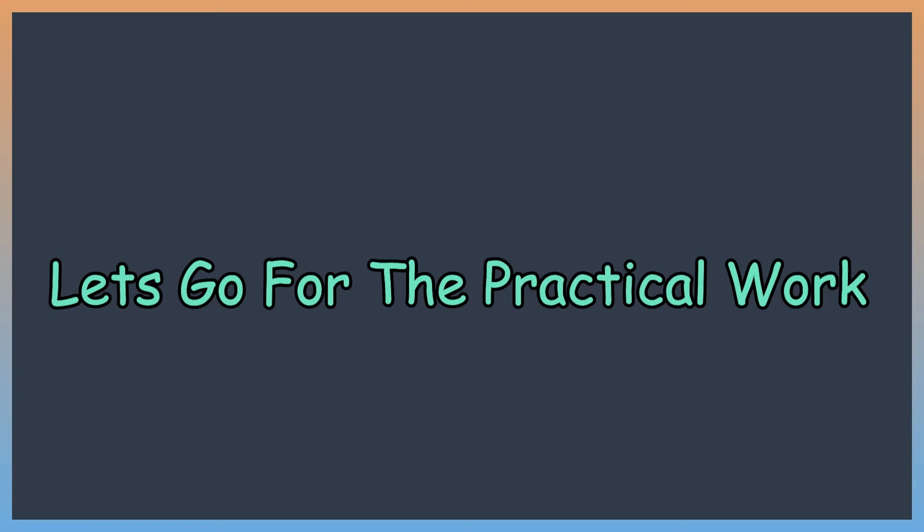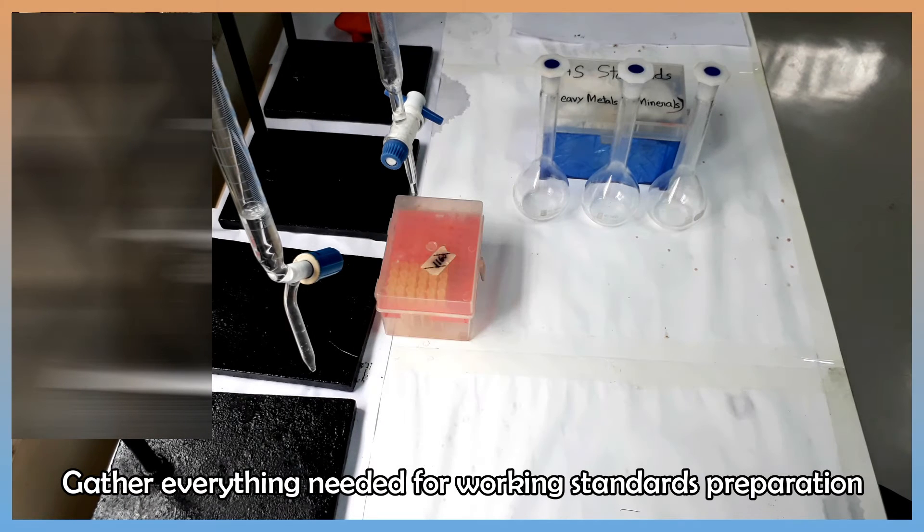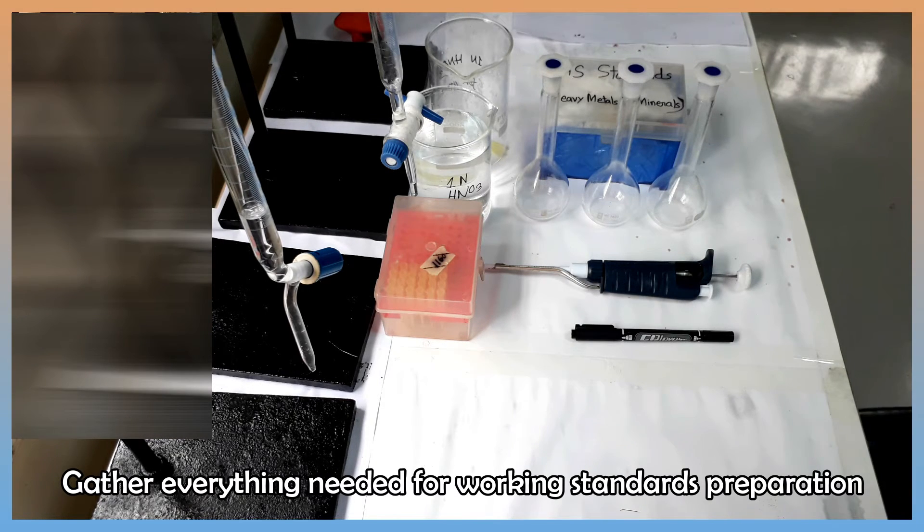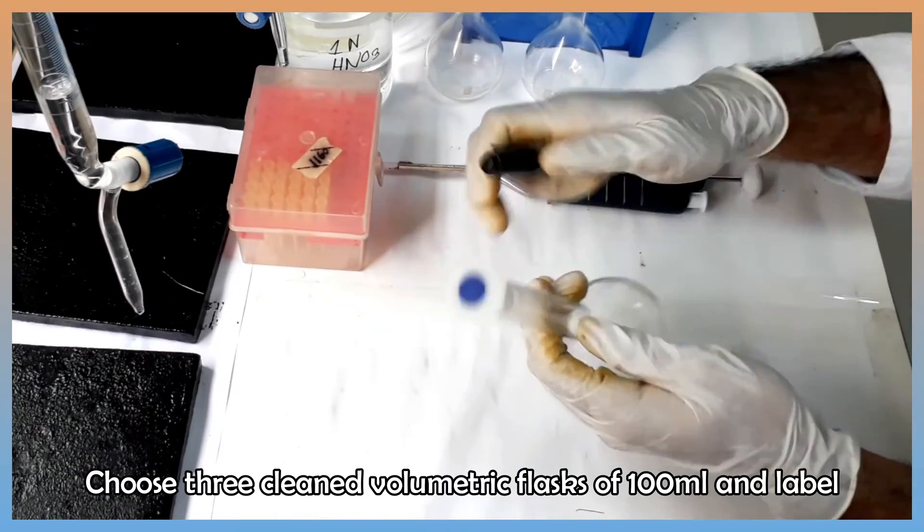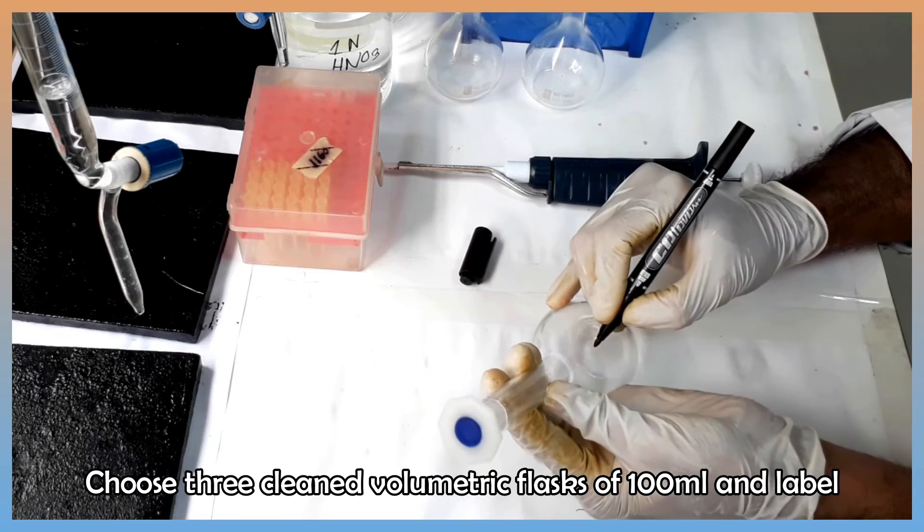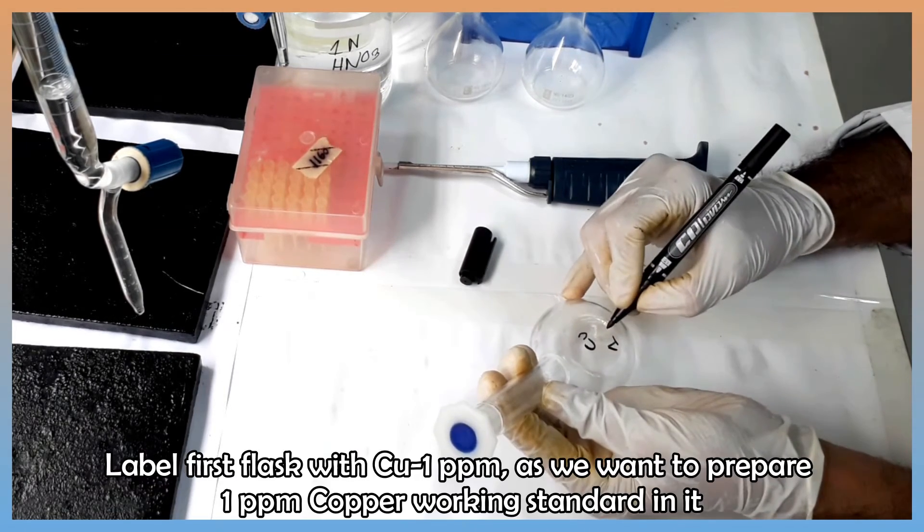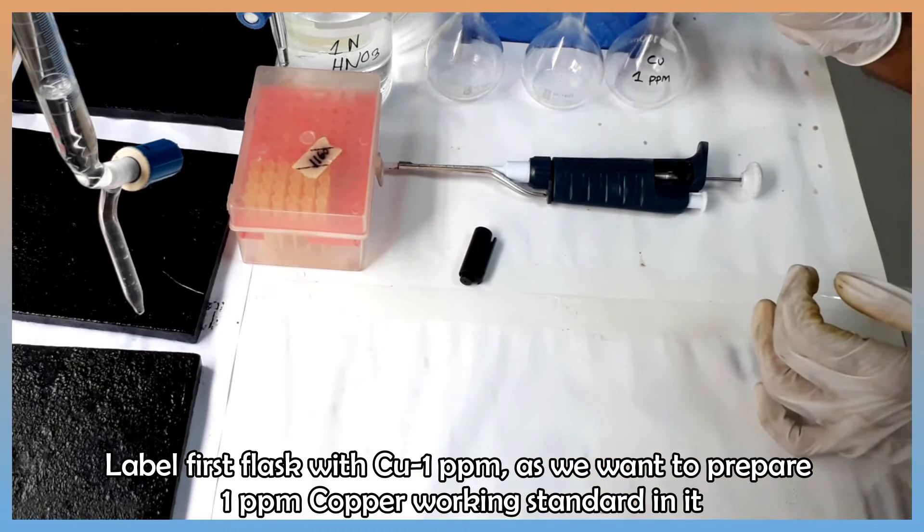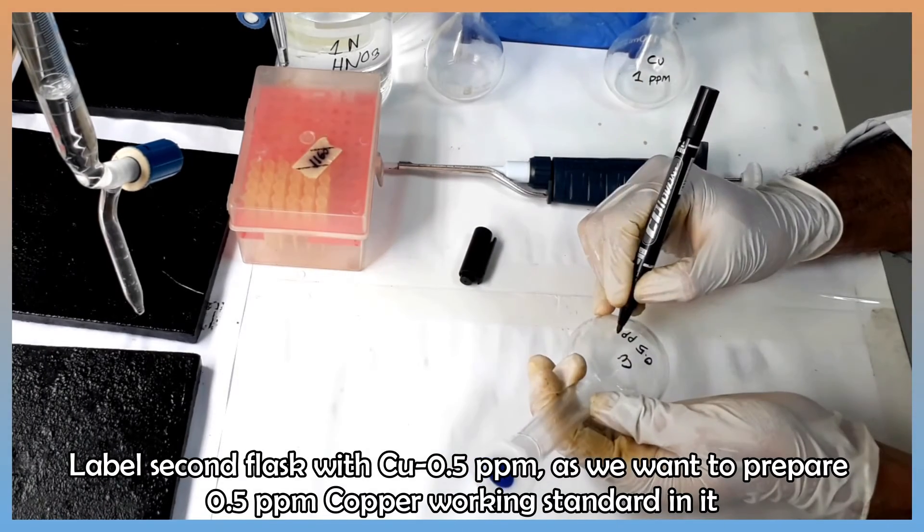Now we are going to prepare copper working standards of 1 ppm, 0.5 ppm and 0.25 ppm practically. Choose properly cleaned 3 volumetric flasks of 100 ml. Video link of glassware cleaning procedure is given in the description section. We will use 1 normal nitric acid as diluent. Label flask 1 with copper 1 ppm, flask 2 with copper 0.5 ppm and flask 3 with copper 0.25 ppm.